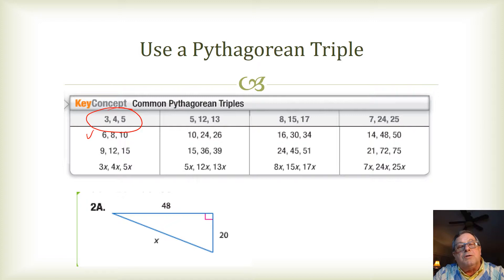In other words, you see here 6, 8, 10. Well, if I multiply 2 times 3, 4, 5, I get 6, 8, 10.